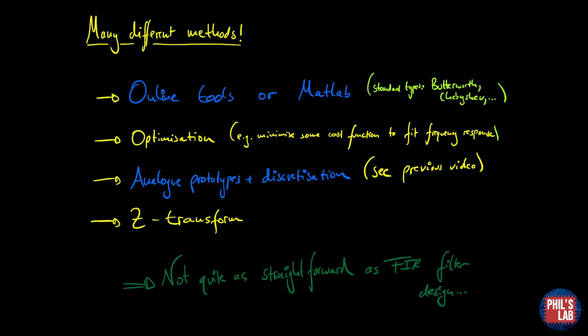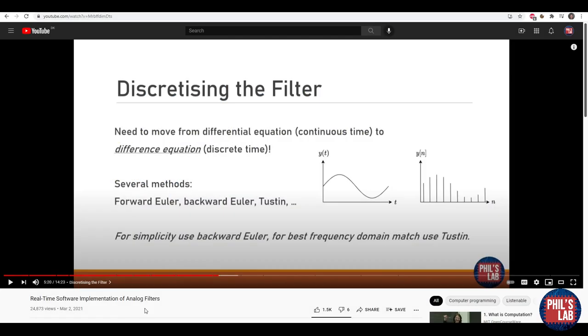The more straightforward way, something you can also do by hand a lot of times, is using analog prototypes, writing a differential equation and then discretizing that differential equation to give you a difference equation and that will actually turn into an IIR filter. I actually have a full video of how to discretize and implement emulations of analog filters called Real-time Software Implementation of Analog Filters and you can find it on my channel.